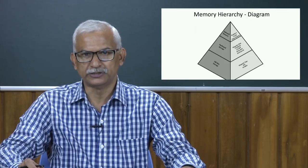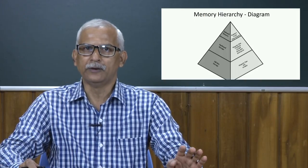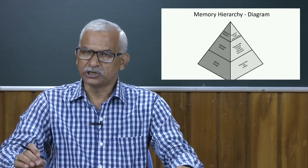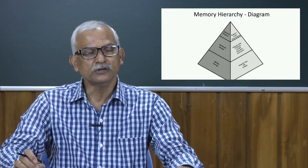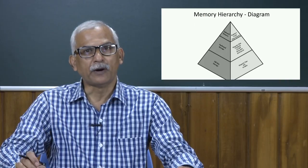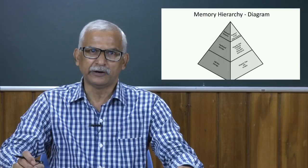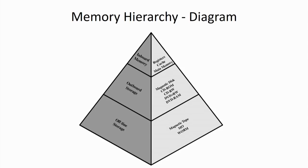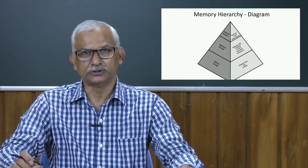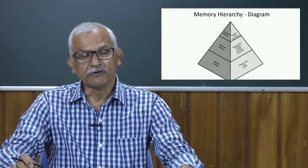Why do we require a hard disk or storage devices? We know that a computer works on von Neumann's stored program principle and the processor works with data available in main memory. Main memory is a semiconductor device and it is volatile in nature — once you switch off the machine, information simply disappears from memory. So we need some permanent storage devices. Also, main memory has limited capacity — maybe 2 GB or 4 GB in the current scenario — and we have to load the operating system, application software, and programming data in that memory. It is not sufficient, so we need secondary storage devices. One of the most common secondary storage devices is the hard disk.